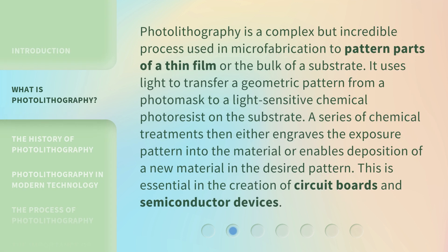Photolithography is a complex but incredible process used in microfabrication to pattern parts of a thin film or the bulk of a substrate. It uses light to transfer a geometric pattern from a photomask to a light-sensitive chemical photoresist on the substrate. A series of chemical treatments then either engraves the exposure pattern into the material or enables deposition of a new material in the desired pattern. This is essential in the creation of circuit boards and semiconductor devices.